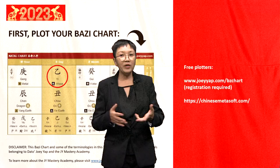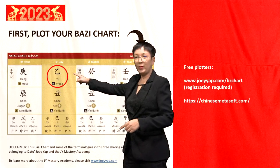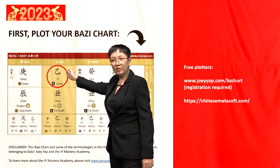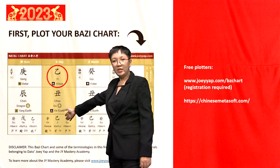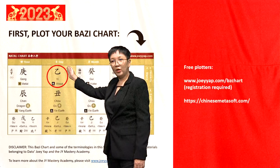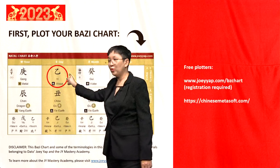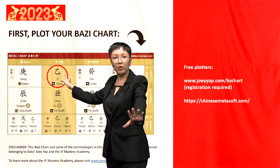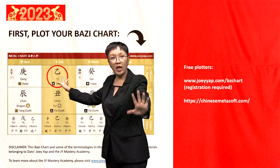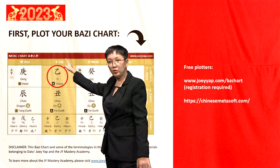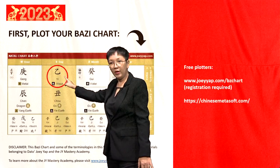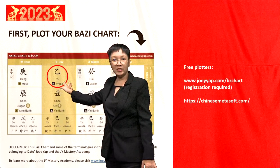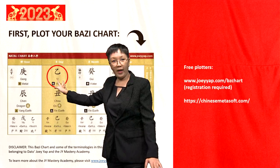We're looking for this piece of information — this column that is usually in gold with the word 'Day' on top. I know not everyone can read Chinese, but just recognize this character. In English, it says Yi, Y-I.